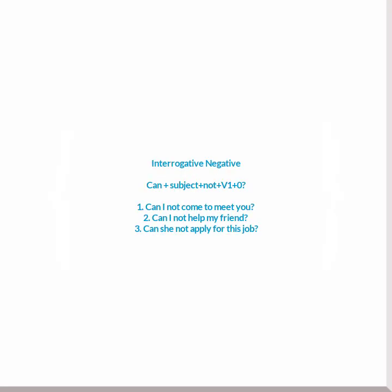For creating an interrogative negative sentence, first of all put 'can', then the subject, then 'not', then the first form of the verb, then the object, and then a question mark.